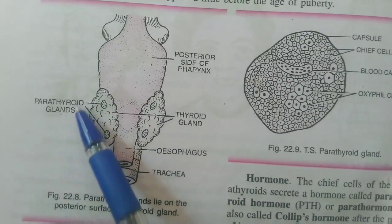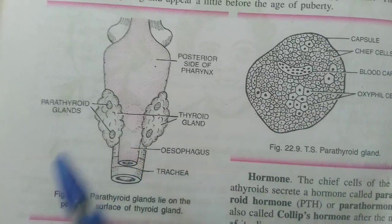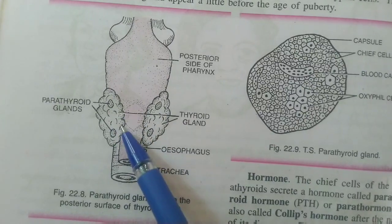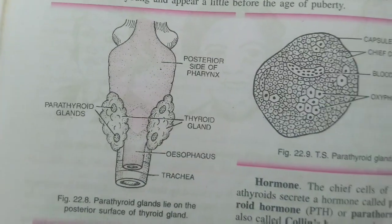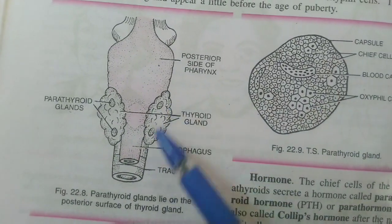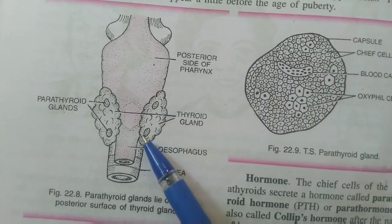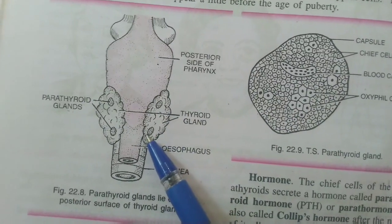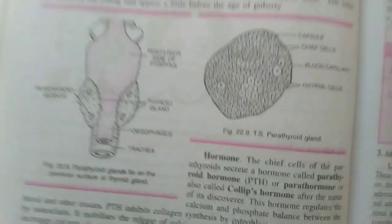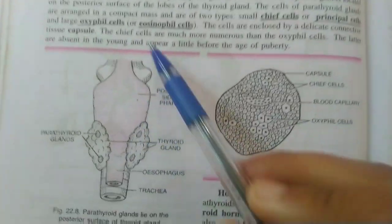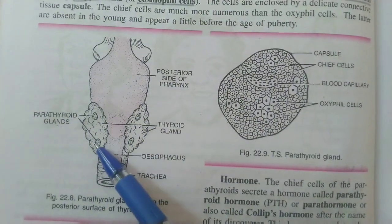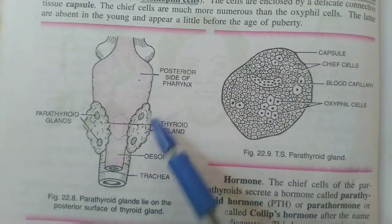These parathyroid glands are very much related to the thyroid gland. They have a very important connection and function, and they are embedded in the thyroid gland. First of all, let's study about them. These are the parathyroid glands, and they are four in number.